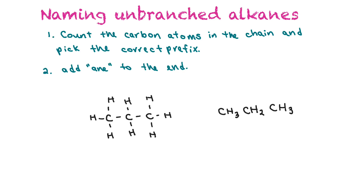So let's take a look here. We've got three carbons and they're all single bonds, so we know it's an alkane. We look up the prefix — the prefix for three carbons is prop — and then we add 'ane' to the end. So it's propane.